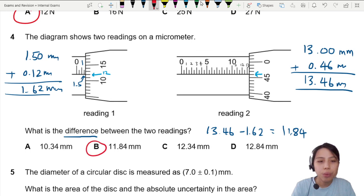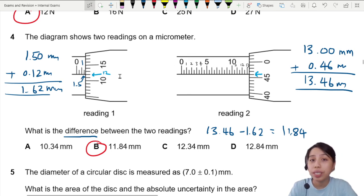So this one, once we subtract, remember, must remember to subtract, it's going to be 11.84. Okay, that's how we read a micrometer. It's good to revise a bit how to read this and also the vernier calipers. They'll be helpful in theory papers.